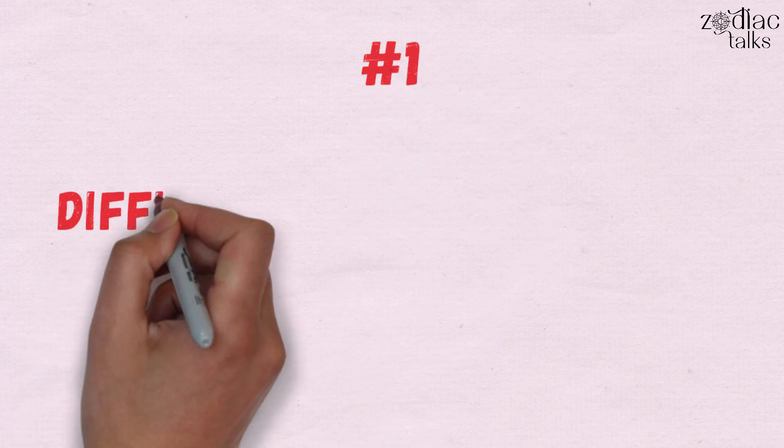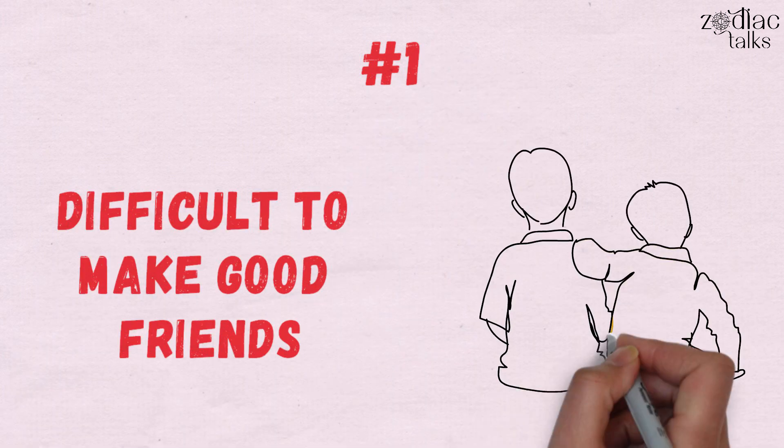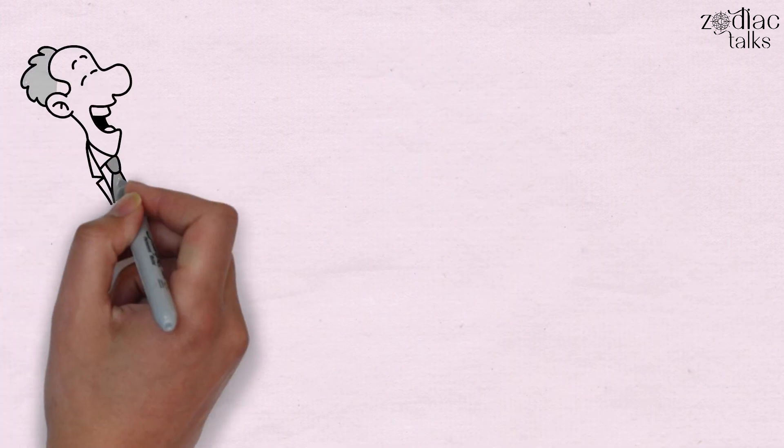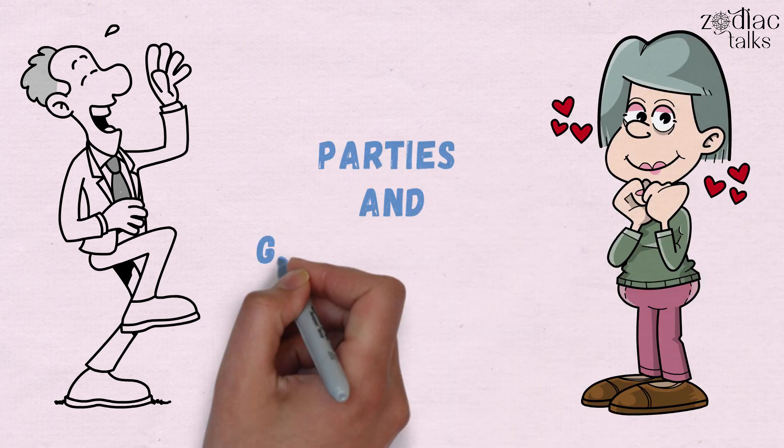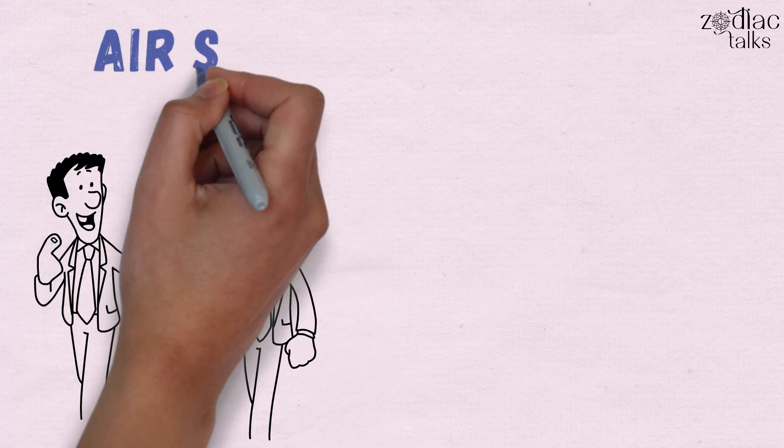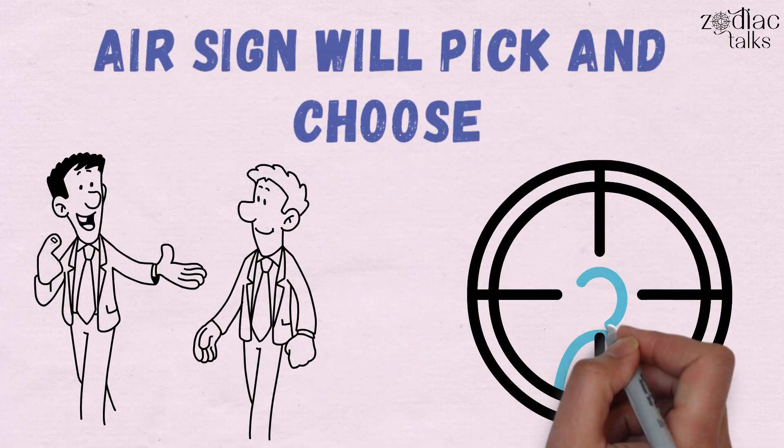1. It's Difficult to Make Good Friends. As they're funny and bright, people are drawn to Aquarians during parties and get-togethers. While Aquarians may spend some casual time with them, the air sign will pick and choose friends carefully.